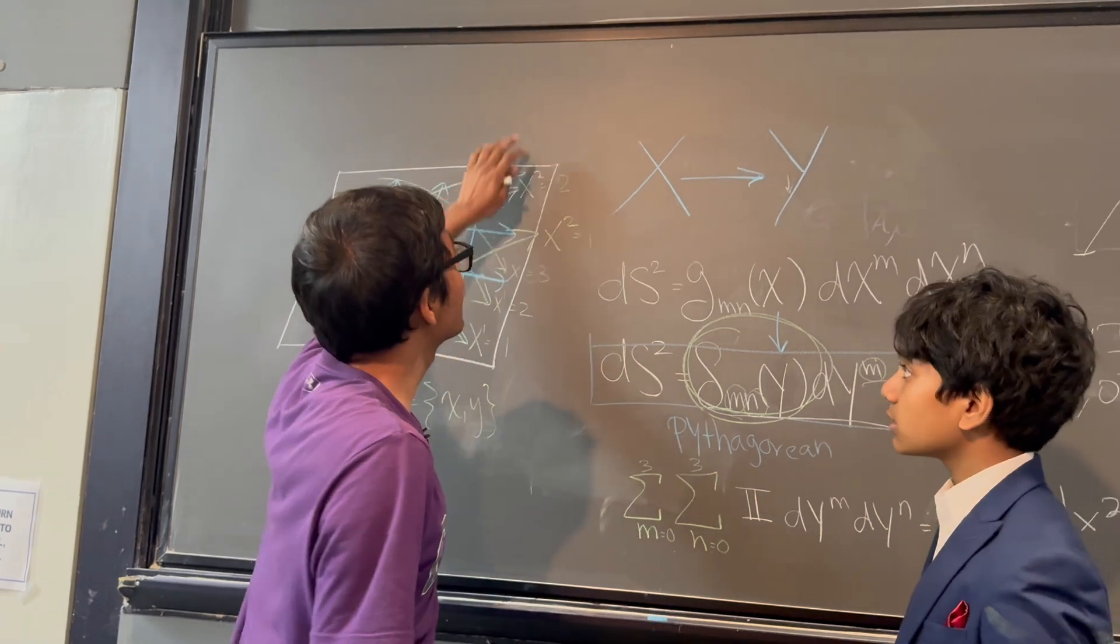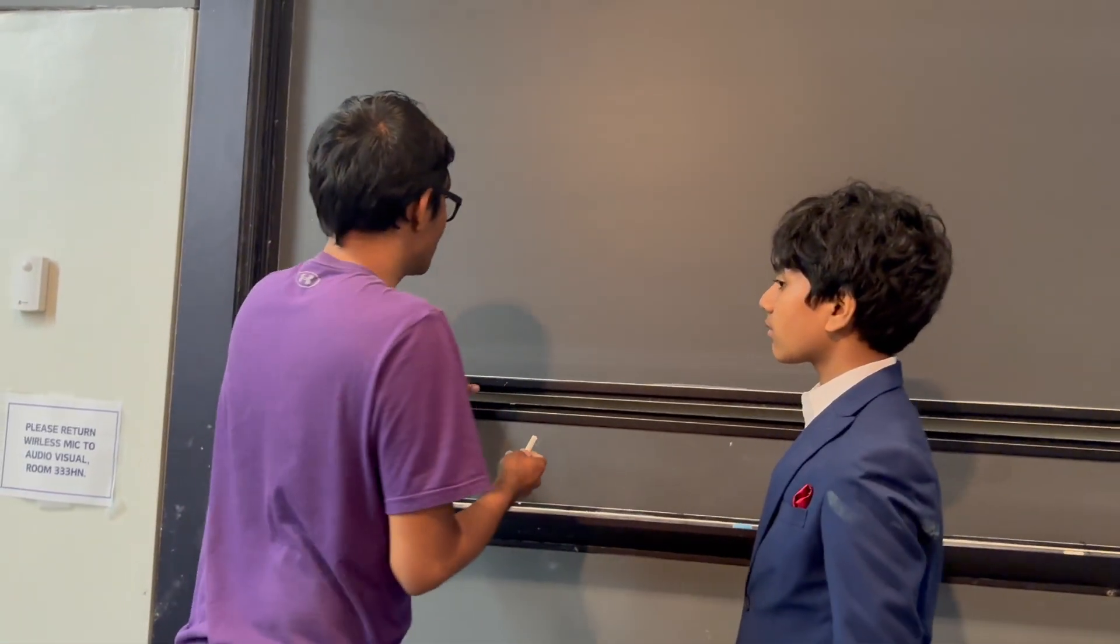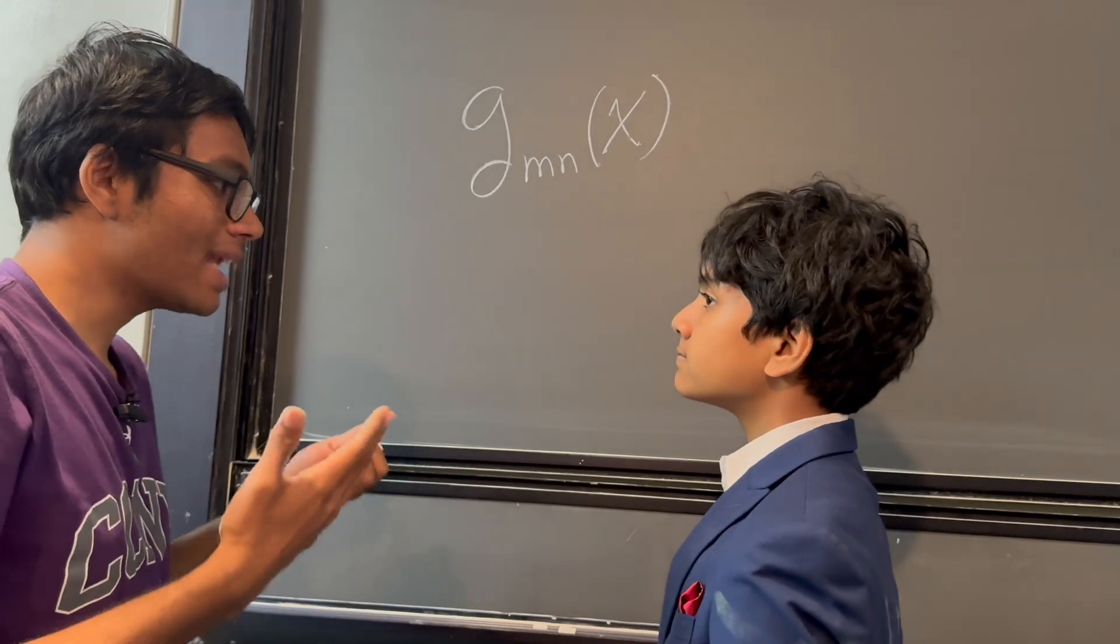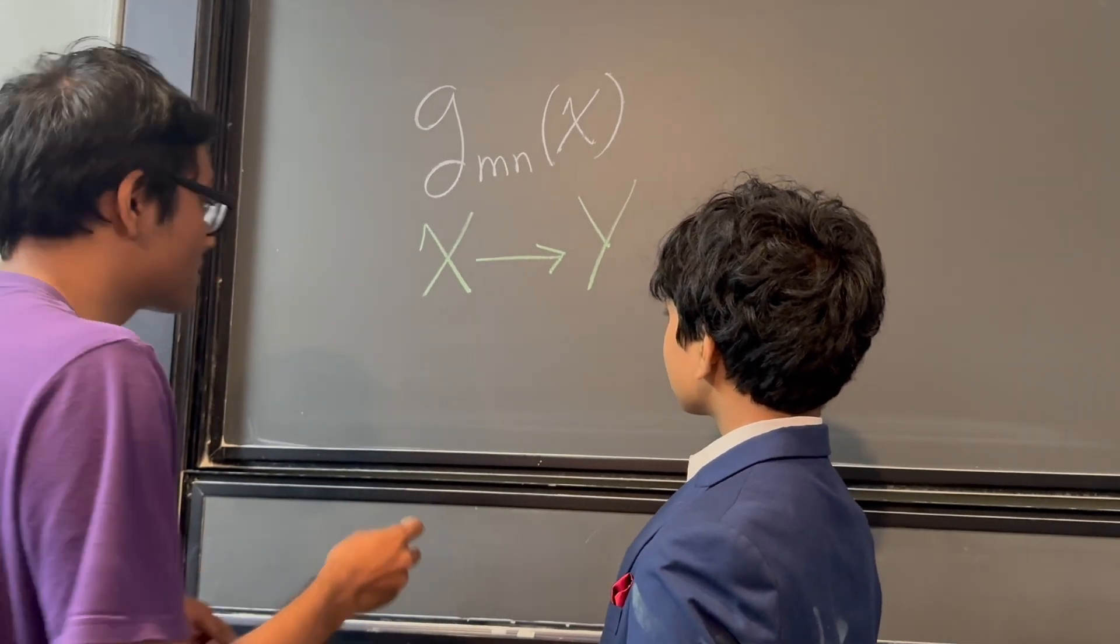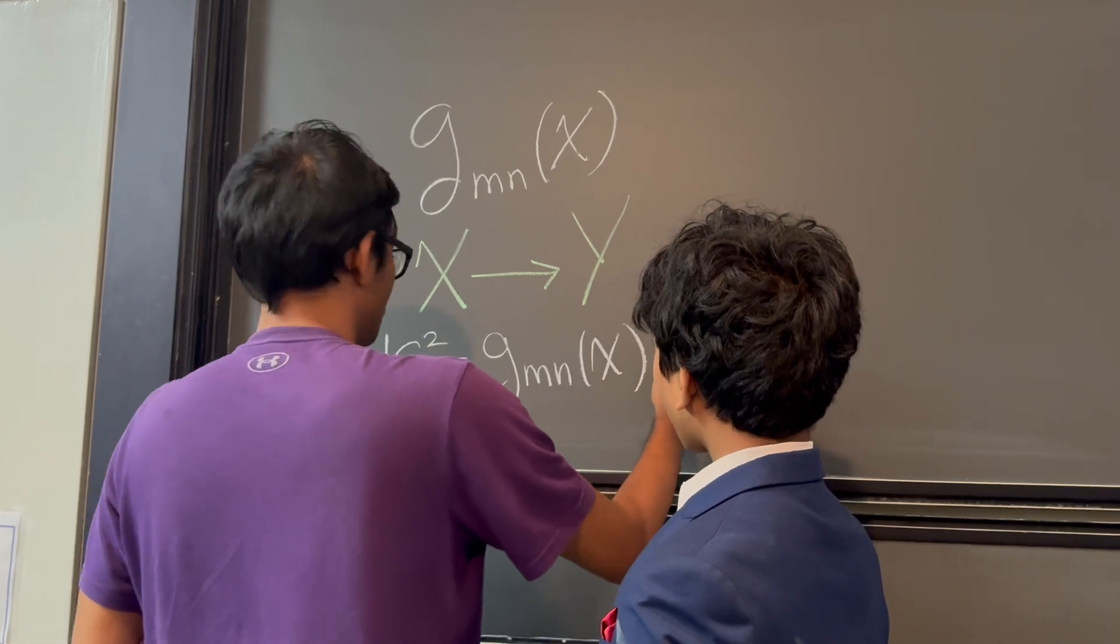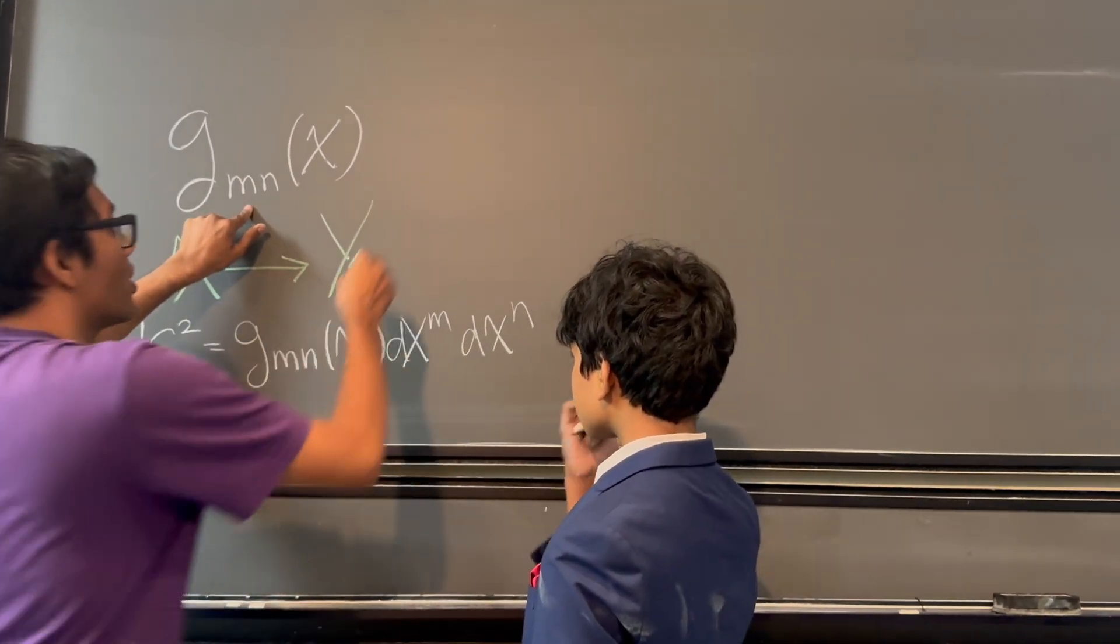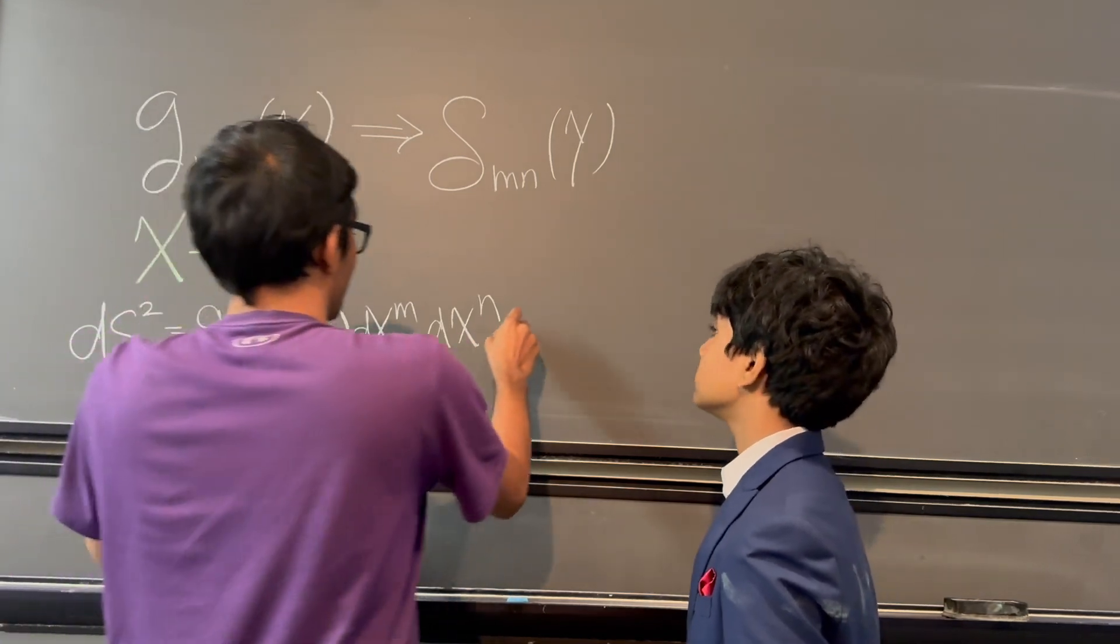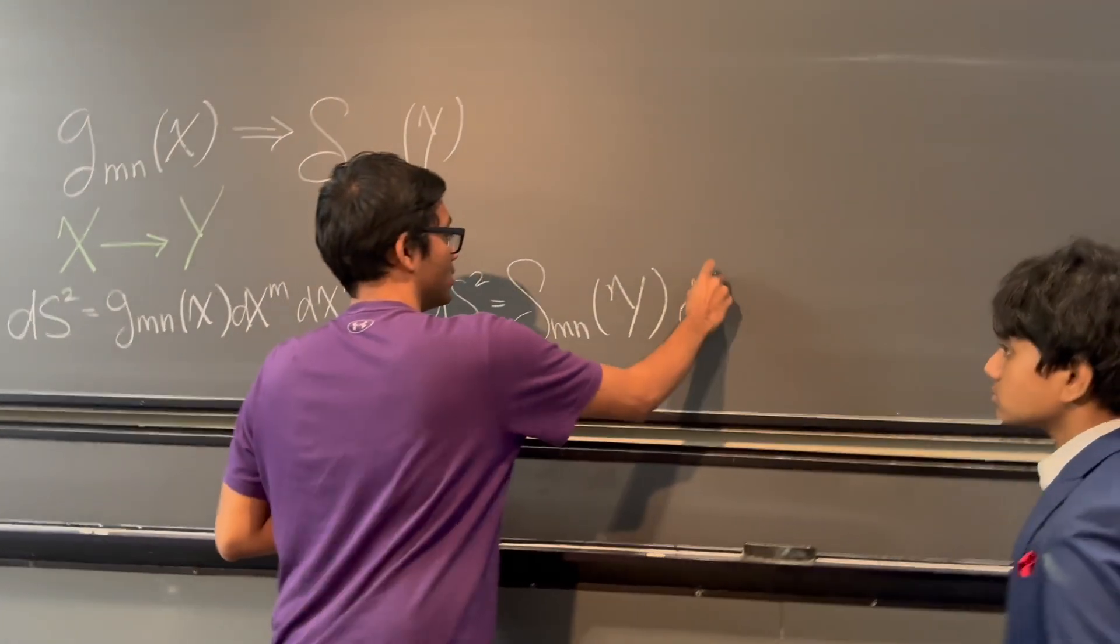The question is, given a metric, given a metric g sub mn of x, is there a coordinate transformation from a basis x to a basis y that takes us from a spacetime interval given by ds squared g mn x, dx m, dx n, to, instead of this kind of arbitrary metric, can we go to an identity matrix? I think so. Okay? So can we take this to ds squared is equal to delta mn y, our new metric?